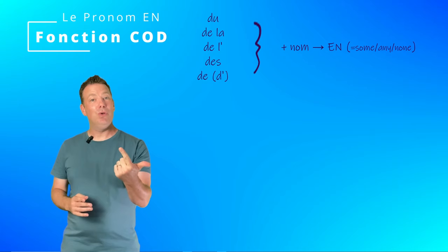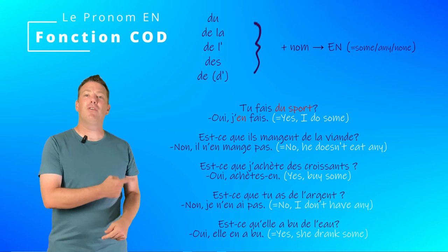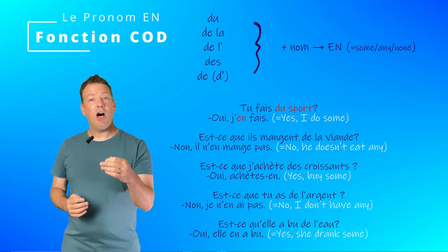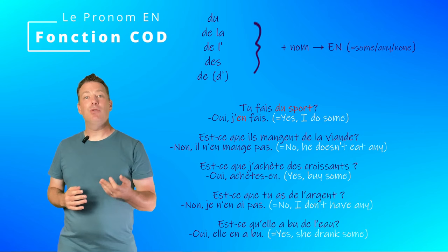The pronoun EN replaces direct objects introduced by the articles DU, DE LA, DE L' (before a vowel), DES, and the negative DE. It will then be translated as SOME, ANY, or NONE. For example: Tu fais du sport? To answer and avoid repeating DU SPORT, we say: Oui, j'en fais. EN replaces DU SPORT, which is the direct object introduced by the article DU.